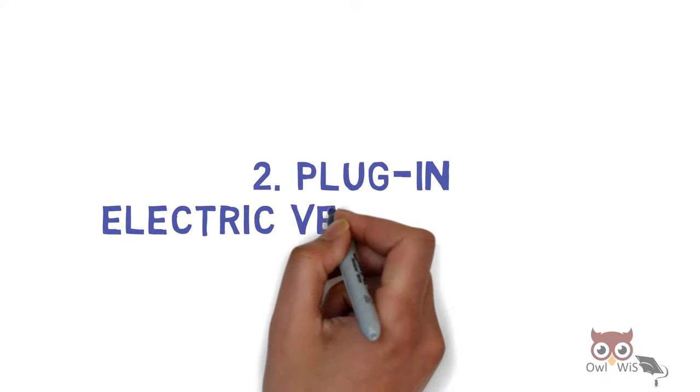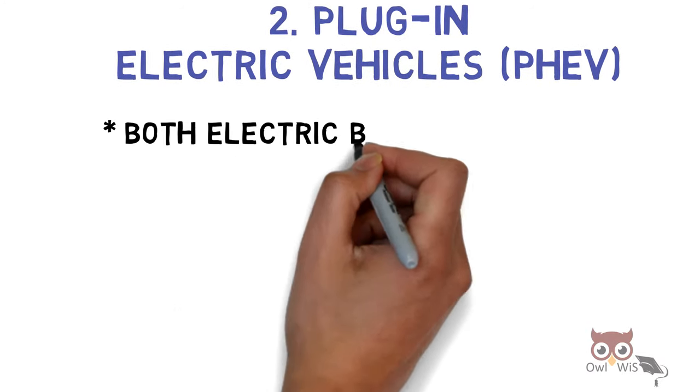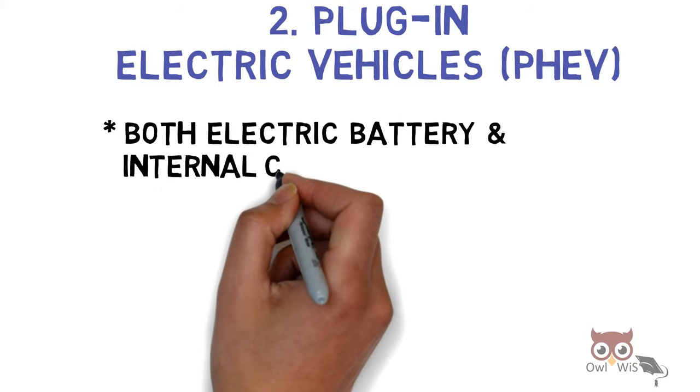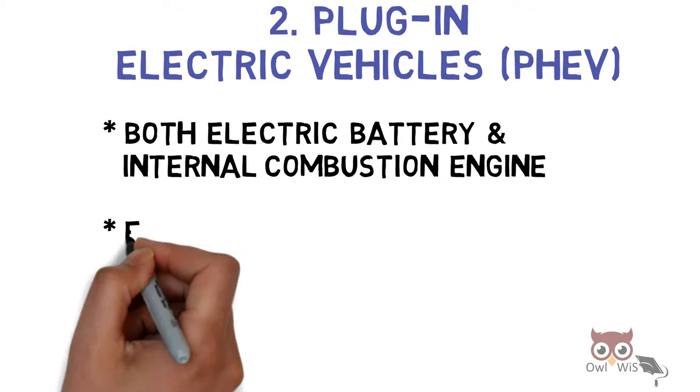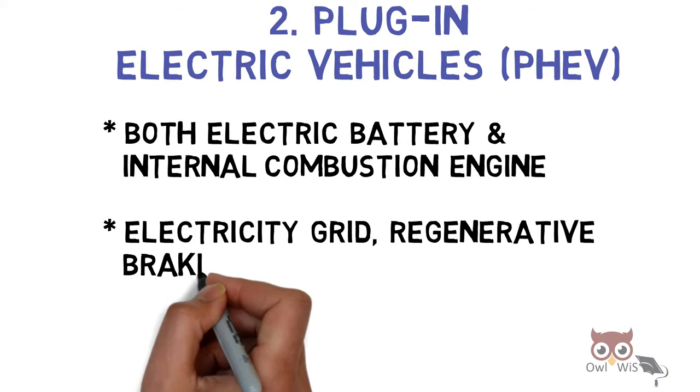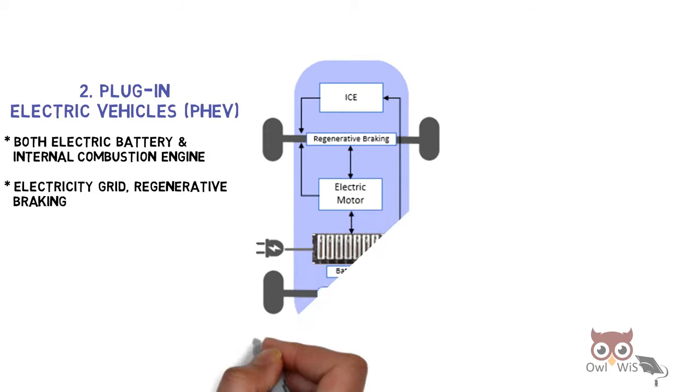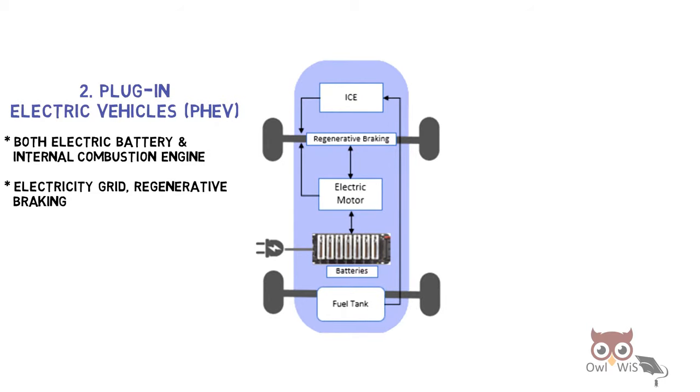Next is Plug-in Hybrid Electric Vehicle (PHEV). They have both an electric battery and an internal combustion engine. They can be recharged from the electricity grid and through regenerative braking. As you can see, there is an external charge port and a smaller battery pack, as an engine is also present.